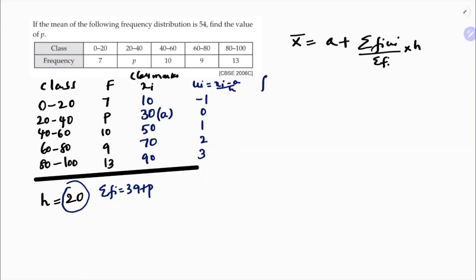Now calculate fi ui. So this two we need to multiply. 7 into minus 1 is minus 7, p times 0 is 0, 10 times 1 is 10, 9 times 2 is 18, 13 times 3 is 39. 39 minus 7, 32, 32 plus 18, 50, 60. So sigma fi ui value is 60.